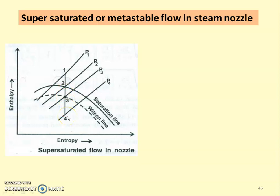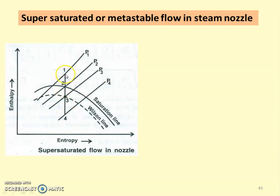States three and four are falling below the saturation line, that is the wet region. P3 and P4 are the lower pressures. The steam expands from P1 to P4 in the nozzle. Looking at the expansion line, it is isentropic expansion. At point one, it is superheated steam and it is expanding.